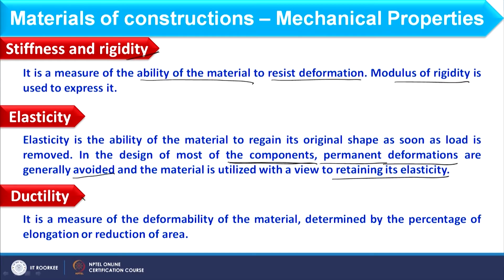Another property is ductility, which is a measure of deformability of the material, determined by percentage of elongation or reduction of area. For example, if a wire is pulled, up to how long it retains its shape without breaking indicates its ductility. The increment in length before breaking essentially quantifies the ductility of that material.